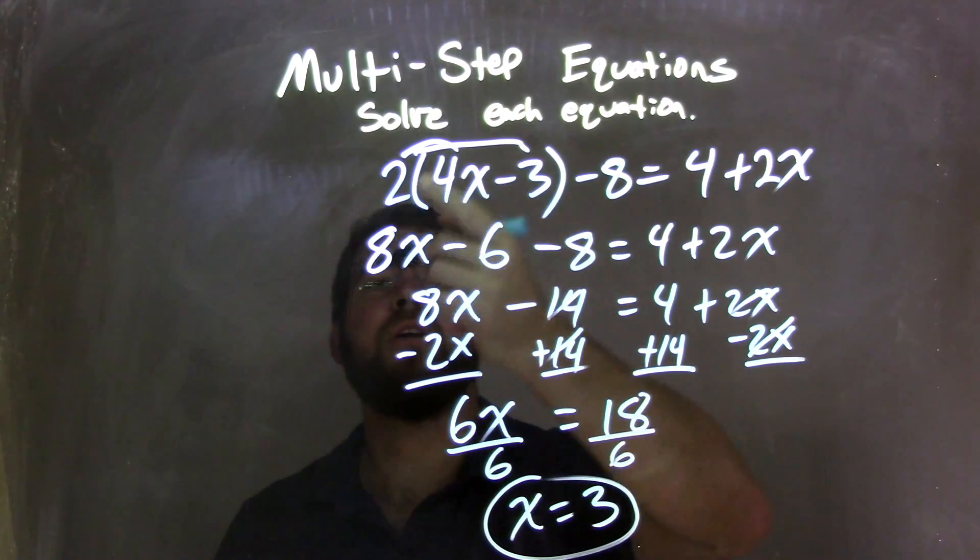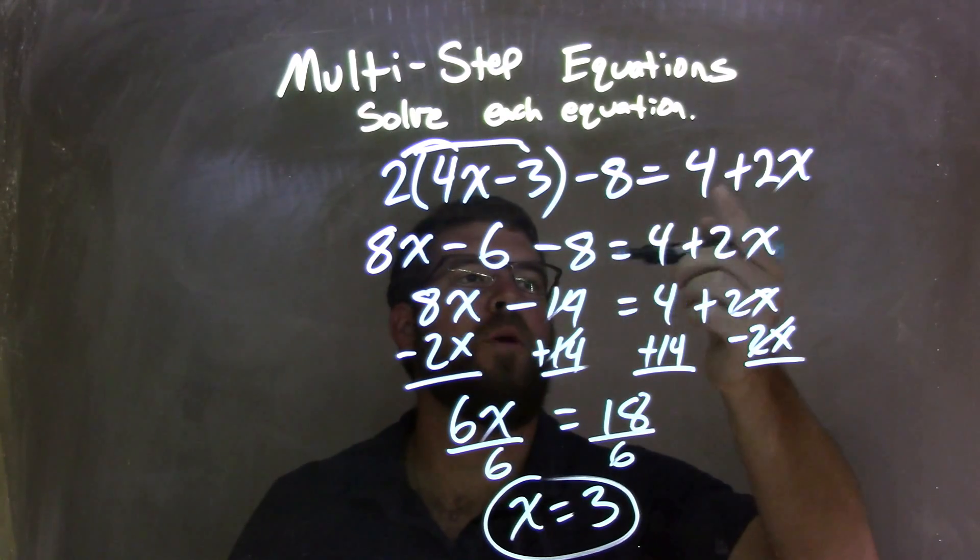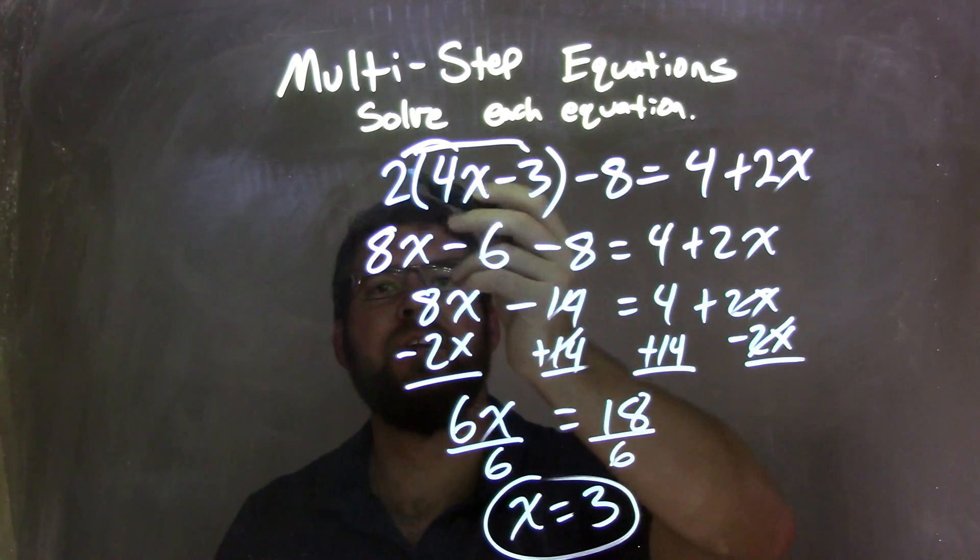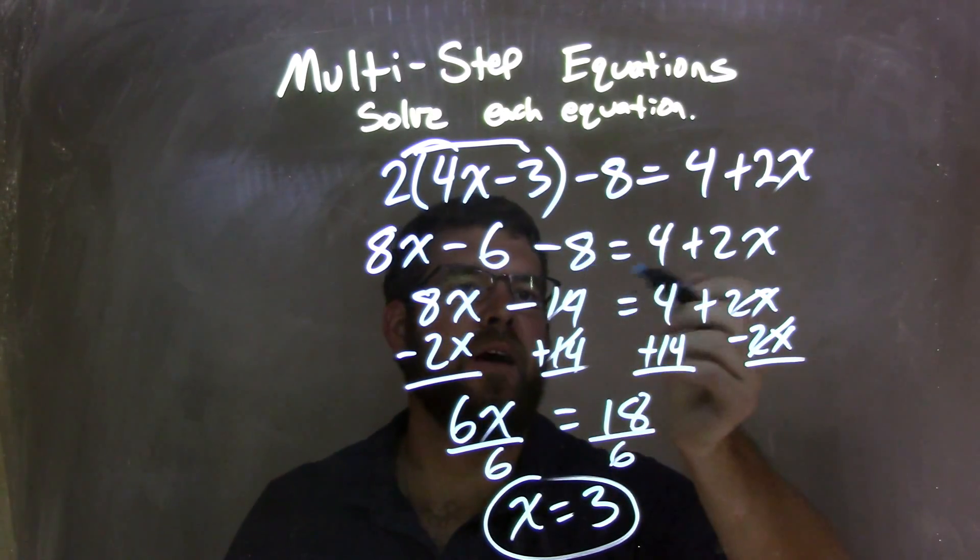So let's recap. We started with 2, parentheses, 4x minus 3, end parentheses, minus 8 equals 4 plus 2x. I first distributed the 2 across, 2 times 4x is 8x, 2 times 3 is 6, with a minus 6 there, and then the minus 8 was on the outside.